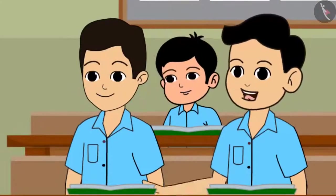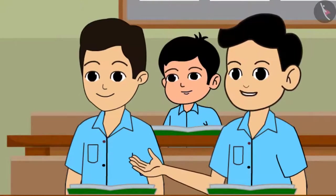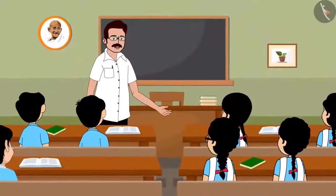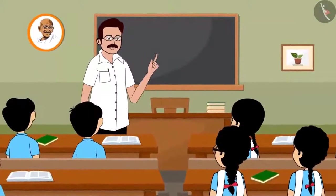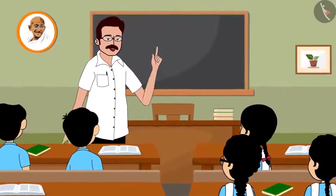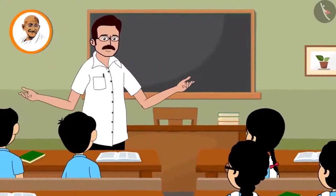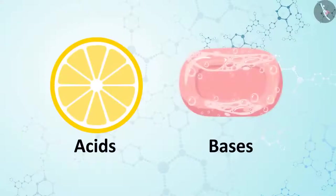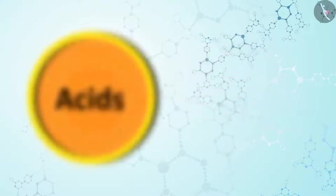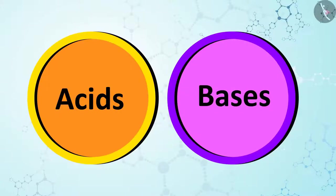Sir, there must be some indicator to determine whether a substance contains acid or base. We cannot taste each and every substance to determine whether it contains acids or bases — the time is over now, let us talk about it tomorrow. Children, we have come to know the difference between acids and bases. While acids dissolve in water, most bases do not. In the next video we will learn about indicators that determine whether substances contain acids or bases. Until then, see you!